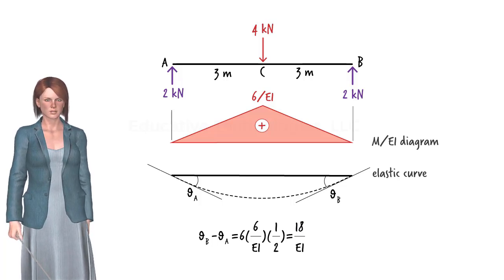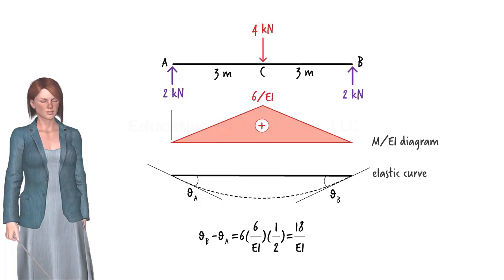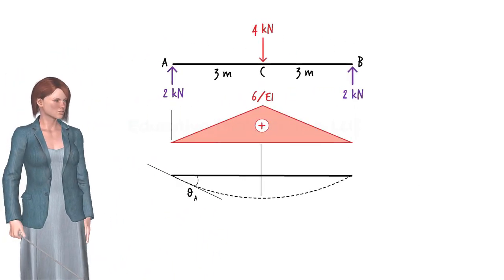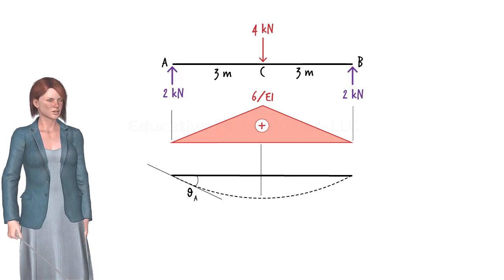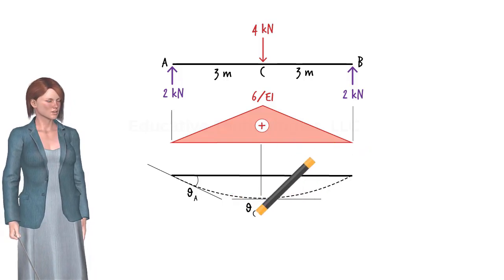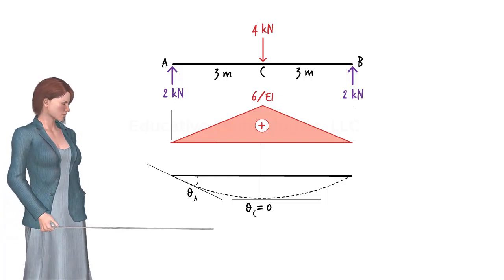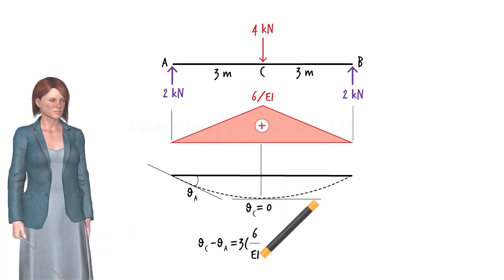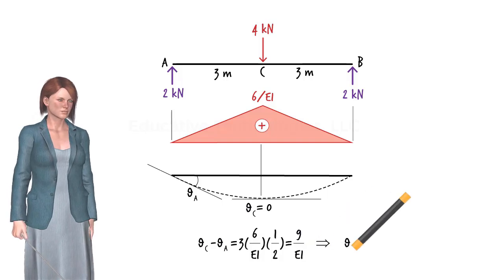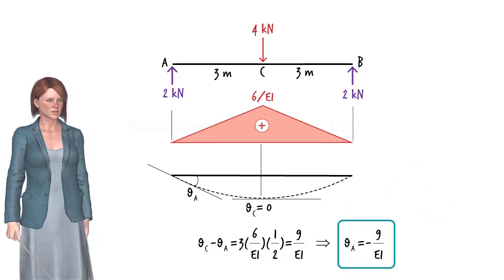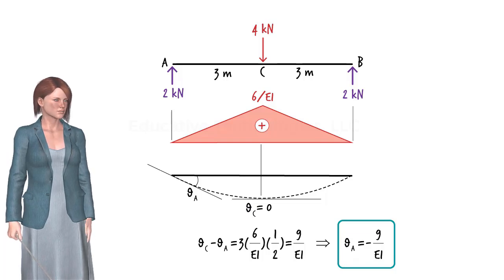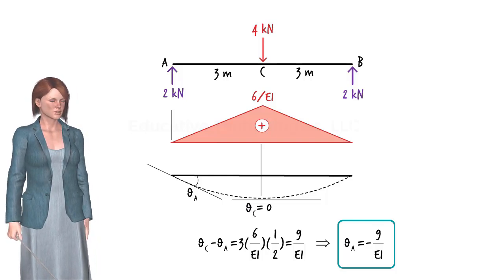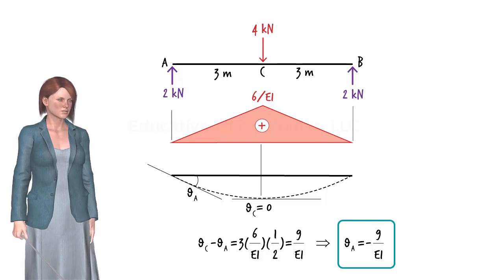To be able to use the first moment area theorem, we need to know one of the slopes in order to determine the other one. For our simply supported beam, given the symmetrical nature of the load, we know the slope of the elastic curve at point C where deflection reaches its maximum value. That slope is zero. Therefore, we can solve for the end slopes. As we just saw, the first moment area theorem has limited computational use — it can be used to calculate the slope at a point only if we already know the slope at another point.